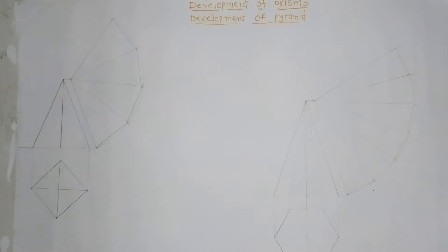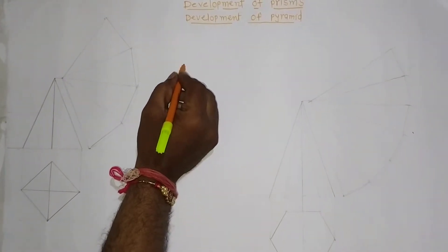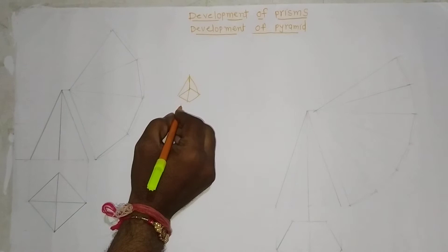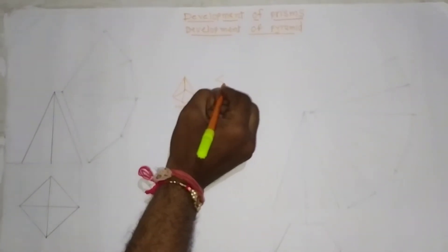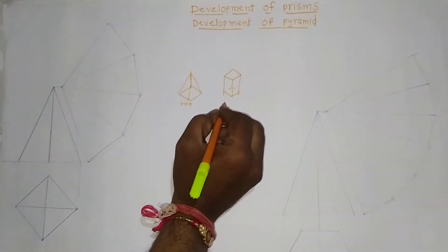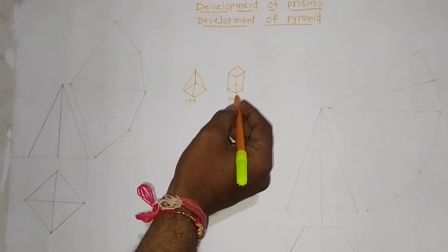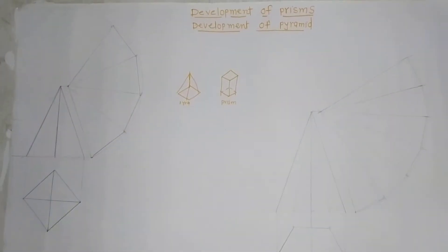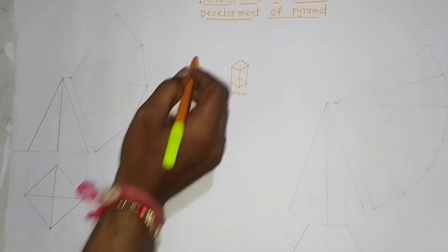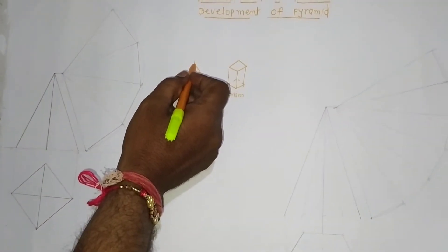First we have to understand the difference between prism and pyramid. This is a square pyramid and this is a prism. What is the difference between these two figures? In the prism, the top face and bottom face are both square. In the square pyramid, the bottom face is square and it has an apex — like a cone. All four corner edges meet at this center point called the apex.